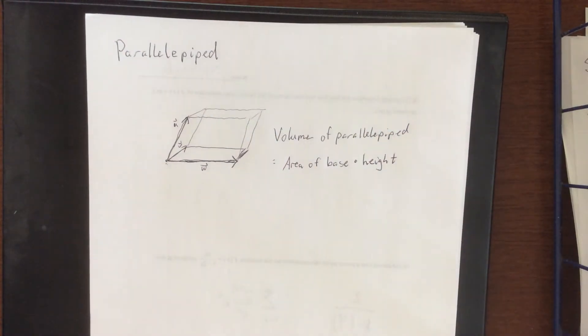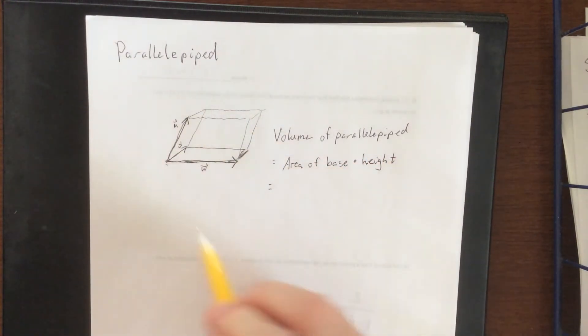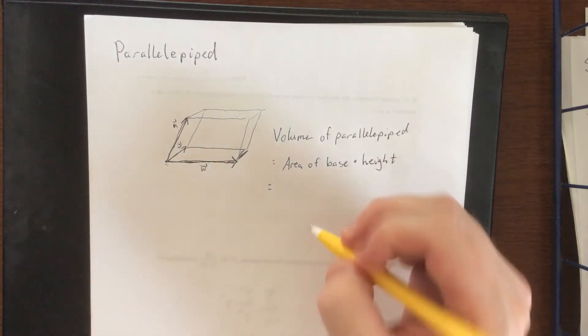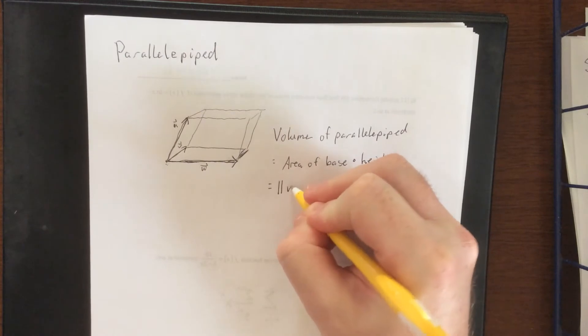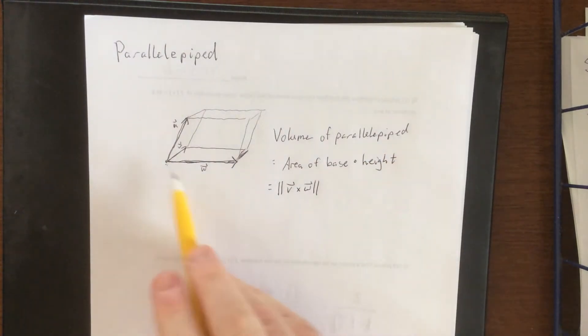Now unfortunately, because these aren't all mutually orthogonal with each other, we are going to have a little bit of difficulty with this calculation. So the area of the base—well, the area is a parallelogram. We know how to find the area of a parallelogram now. That would be the magnitude of the cross product of v and w.